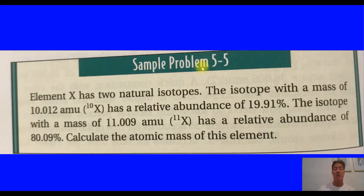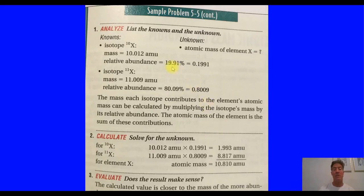Here's another sample problem. Element X has two natural isotopes — the isotope with the lighter mass has a relative abundance of 19%, and the heavier isotope has a relative abundance of 80%. To calculate the atomic mass, we take the weighted average: multiply 0.19 times the lighter mass, plus 0.80 times the heavier mass, and add them together. The calculated value is closer to the more abundant heavier isotope, which makes sense — it's pushing toward the heavier weight because 80% of it is at that heavier mass.